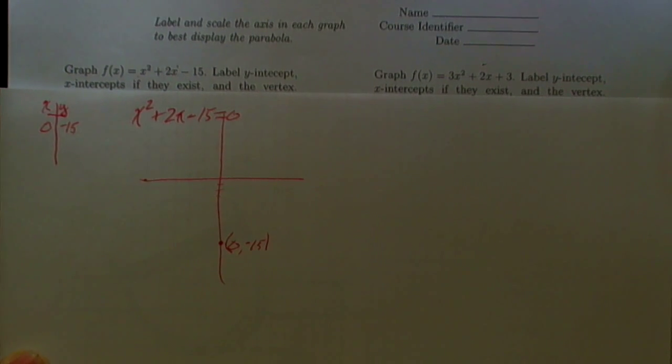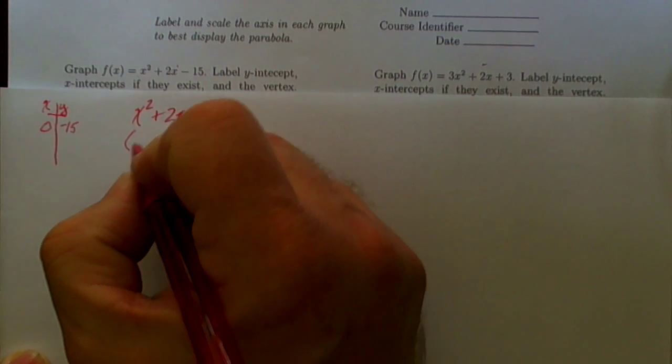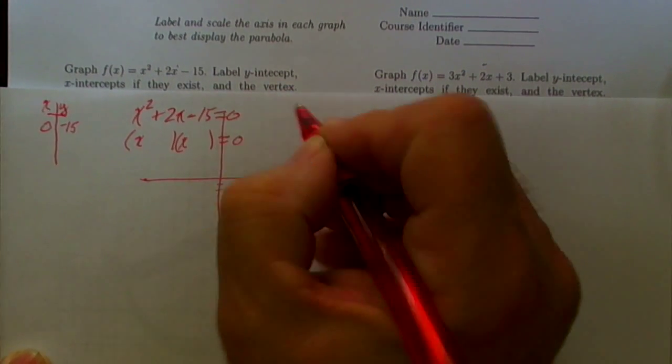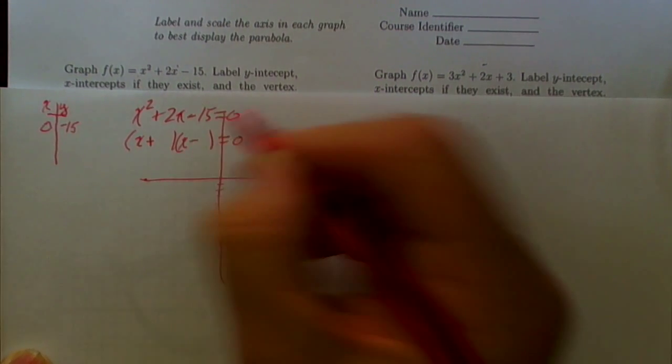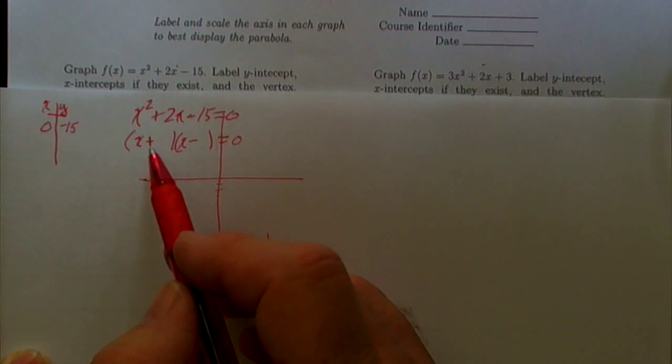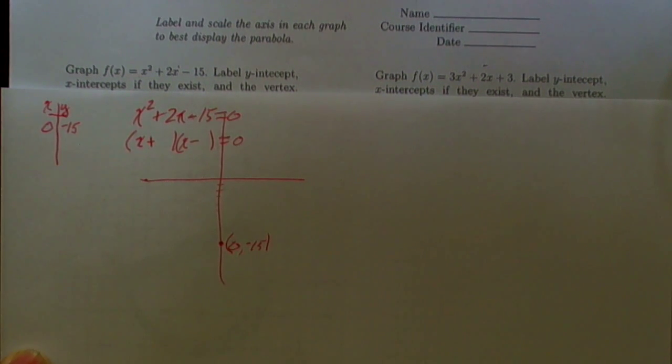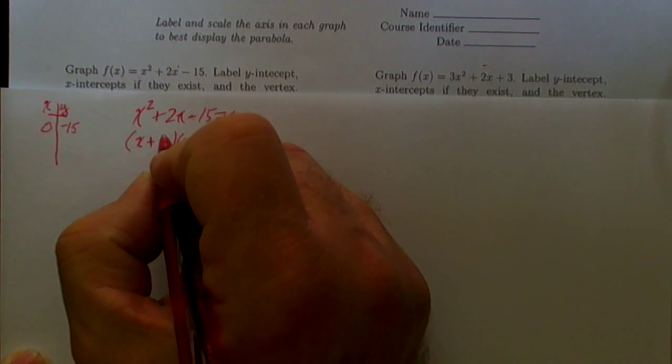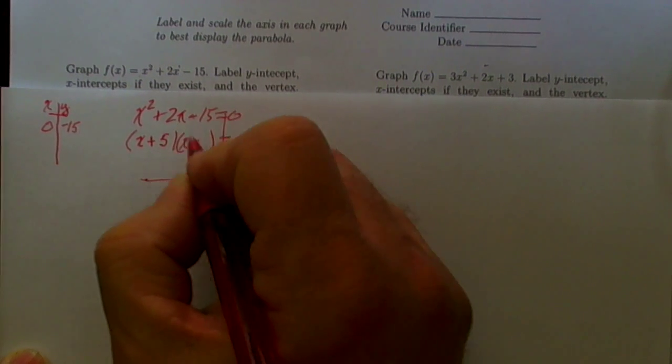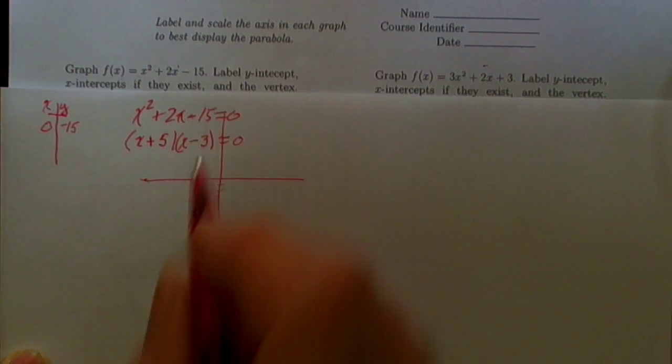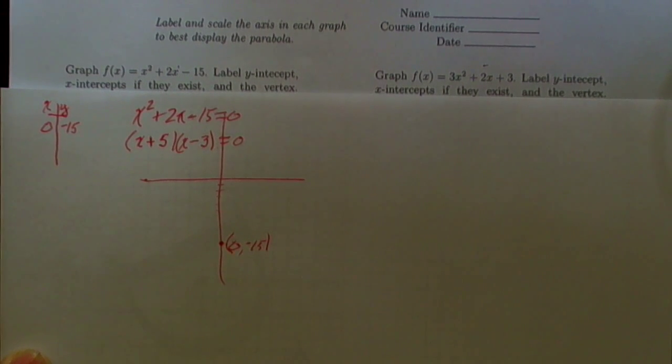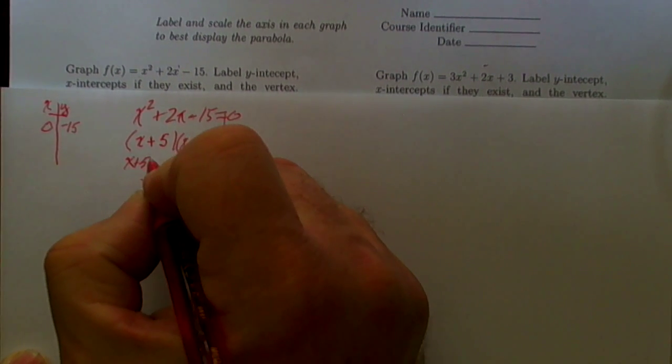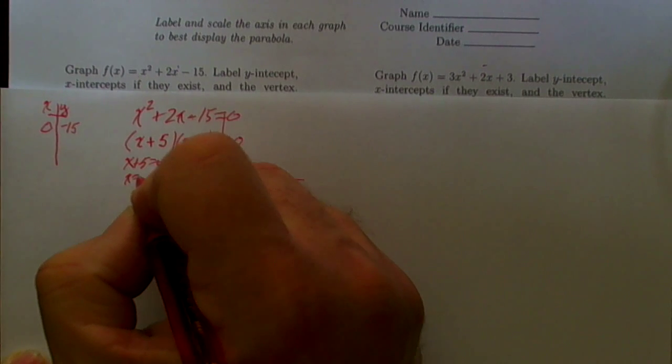Well we could use the quadratic formula of course, but possibly this one factors to be an x times an x is equal to zero. One of these will have to be positive and one will have to be negative because this is negative. We need two numbers that multiply together to give me 15 and that subtract from each other to give a 2. It looks like 5 and 3 will do the job. We need to have positive 5 and negative 3 so this middle term turns out to be positive 2.